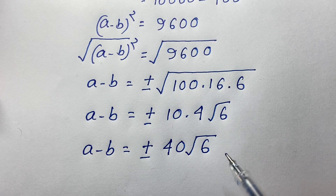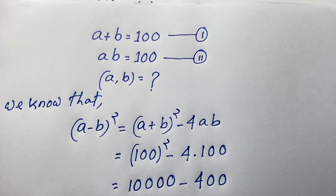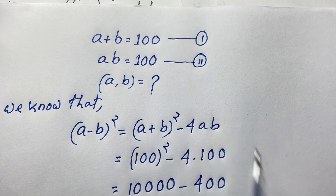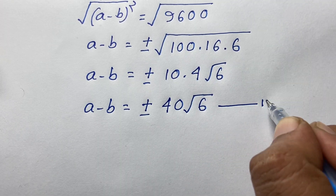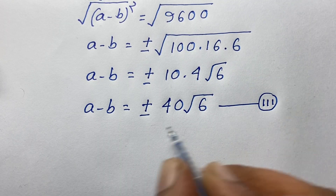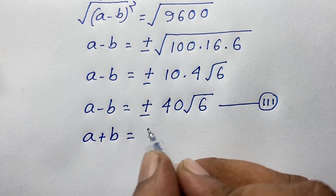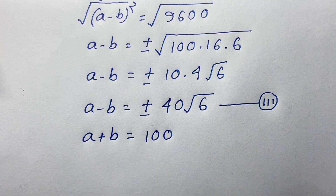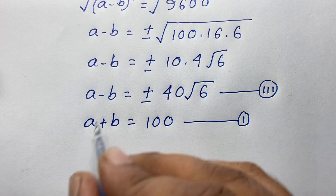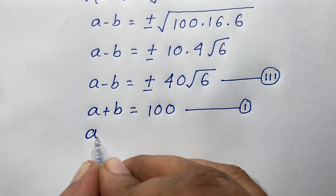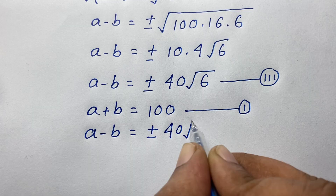We find a minus b equals plus or minus 40 square root 6. This is our third equation. Our first equation is a plus b equals 100, and our third equation is a minus b equals plus or minus 40 square root 6.